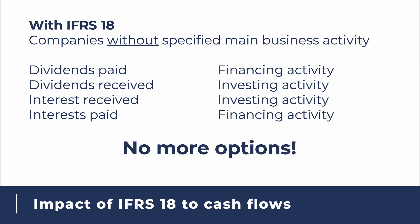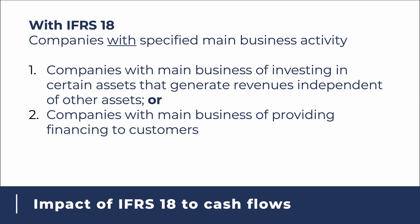We discussed this first because most companies would follow these guidelines, as most cases would not have a specified main business activity in scope of the requirements. Remember, you no longer have an option on these four categories of cash flows. As a recap, the main business activities we are talking about are companies whose main business activity is investing in certain assets that generate revenues independent of other assets, and companies whose main business activity is providing financing to customers, for example, banks and other financial institutions.